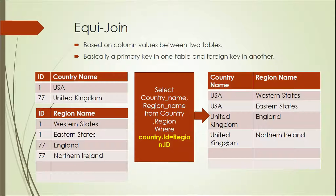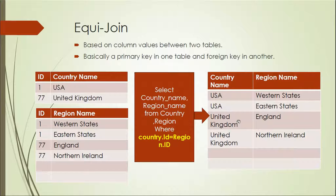An equi join is based on column values between two tables — typically a primary key in one table and a foreign key in another. For example, querying based on country.id equals region.id retrieves matching records such as USA Western, USA Eastern, UK England, and Northern England. If there are no matching records, they will not appear in the resulting table.